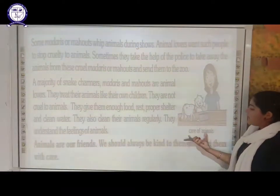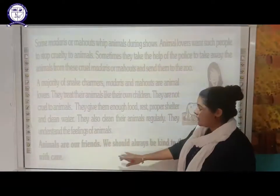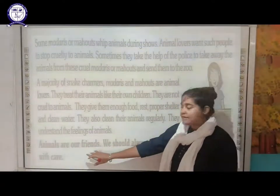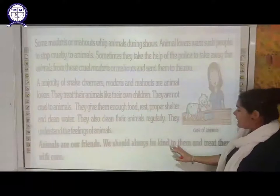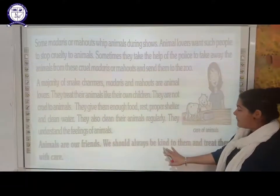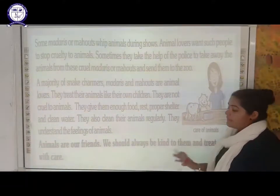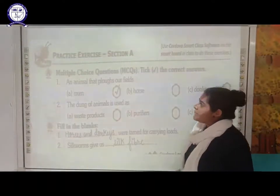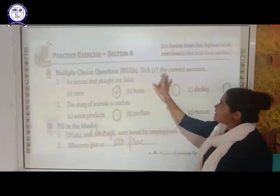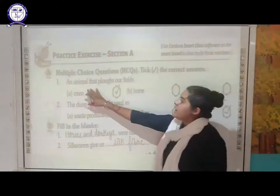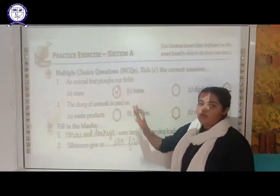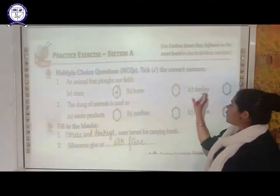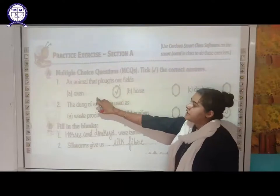Here it is depicted as 'care for animals' — animals are friends. We must treat them as our friends and always be kind to them. Now for the exercise: the first multiple choice question is, which animal plows the field — ox, horses, or donkeys? The right answer is ox. Ox is used to plow the field, whereas horses and donkeys are tamed to carry the load.